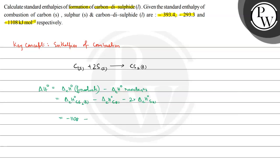The enthalpy of combustion of carbon disulfide is given as minus 1108, minus carbon's enthalpy of combustion which is minus 393.4, minus 2 multiplied by minus 293.3. This equals minus 1108 minus (minus 393.4) plus 2 × 293.3, which is 586.6. The value comes out to minus 128 kilojoules.